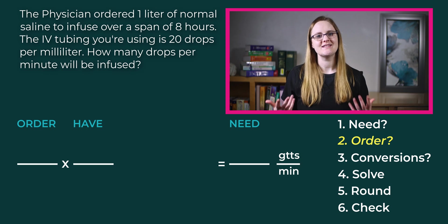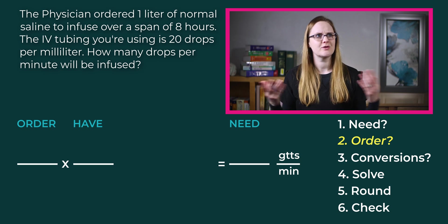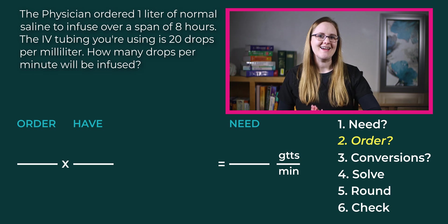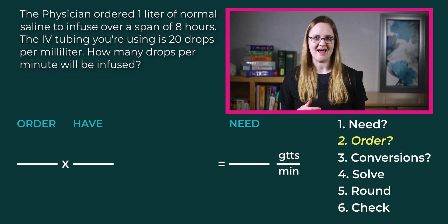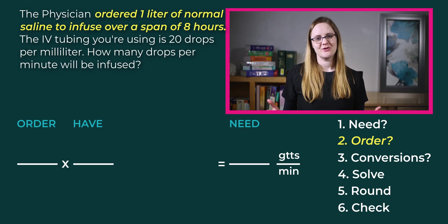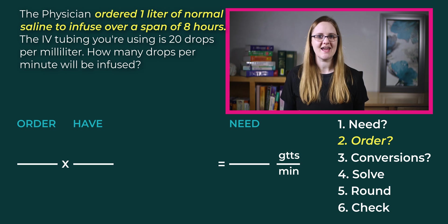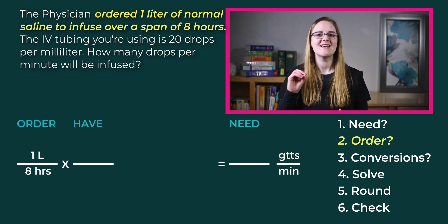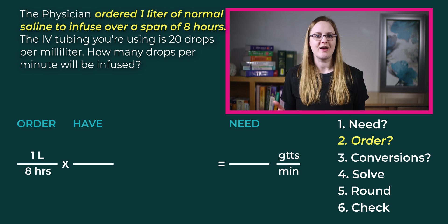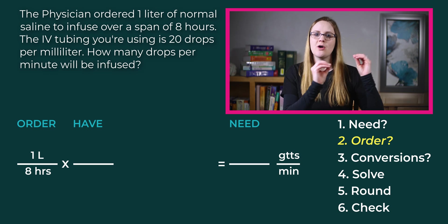Step number two is to look at the problem again and see what the original order says. What was the doctor ordering — a certain number of milligrams, grams, milliliters, or something else? In our question, the physician ordered one liter of normal saline to infuse over eight hours. On the left-hand side of your paper, write what the doctor ordered: one liter over eight hours, written as one liter divided by eight hours.